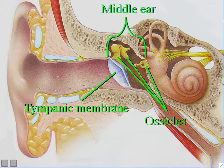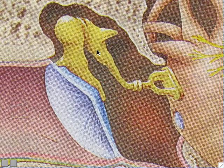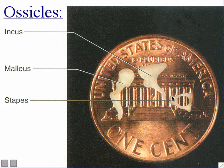One interesting thing about the ossicle bones is that they are the tiniest bones in the human body. Zooming in on them — there's the tympanic membrane, and there's the first ossicle, second ossicle, and third ossicle. They are the smallest bones in the human body. In a neat picture, they easily fit on just one penny — so obviously, they are very, very tiny bones.